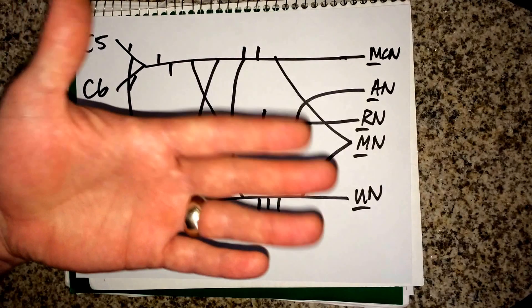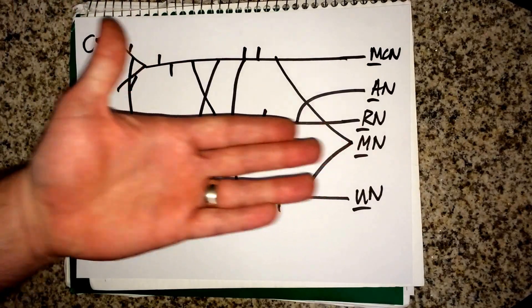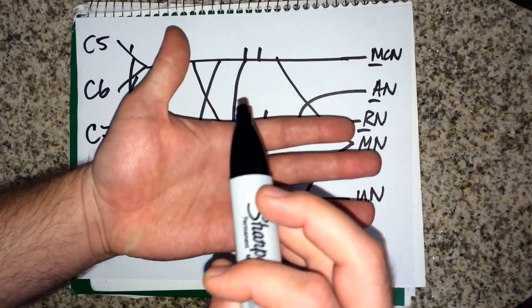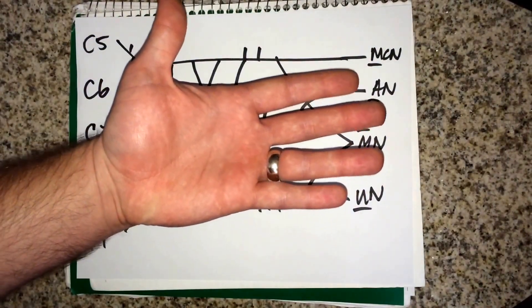Now, let's remember anatomical position. So your palms up. This is your lateral side, your thumbs out. This is your medial side.